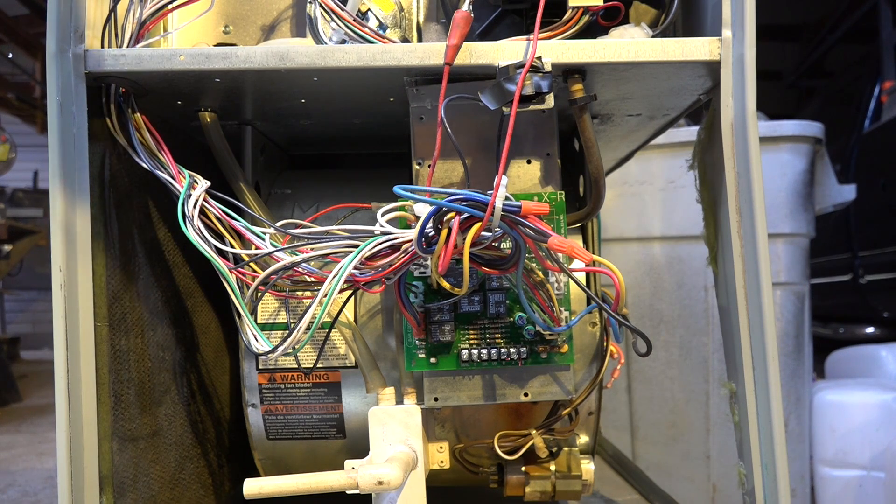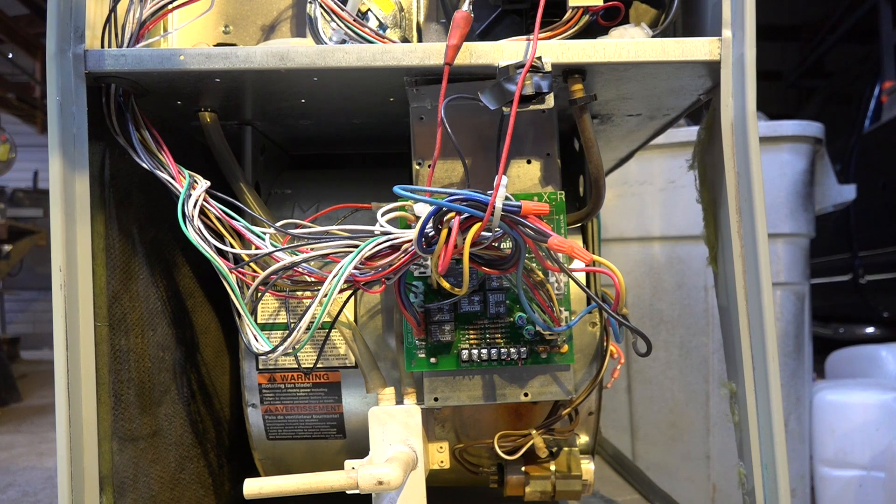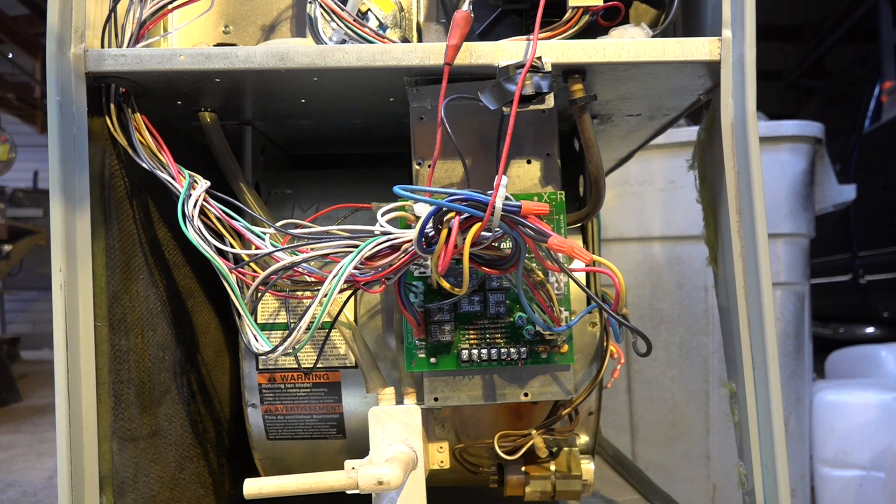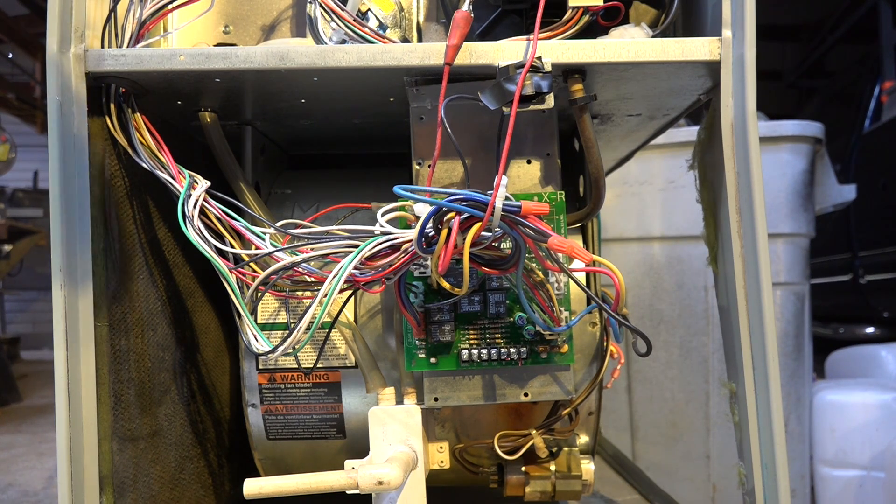G at the thermostat, which would be the fan auto-off position, and it would go to high speed, which is a cooling speed. Normally the reason it's set up that way is when Y is energized at the thermostat, then G is also energized. When the air conditioner comes on, you want high speed on the fan, so you energize Y and G.